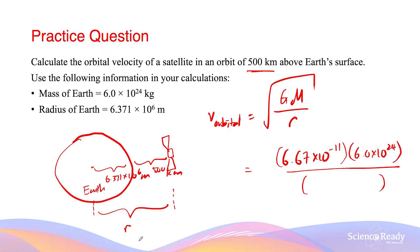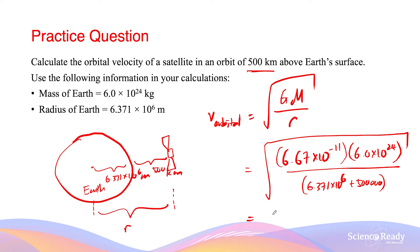The orbital radius r is the sum of the Earth's radius and the altitude: 6.371 × 10⁶ metres plus 500,000 metres. Substituting into the formula gives a velocity of approximately 6,974 metres per second. This means the satellite needs to maintain a velocity of 6,974 m/s in order to remain in this orbit.